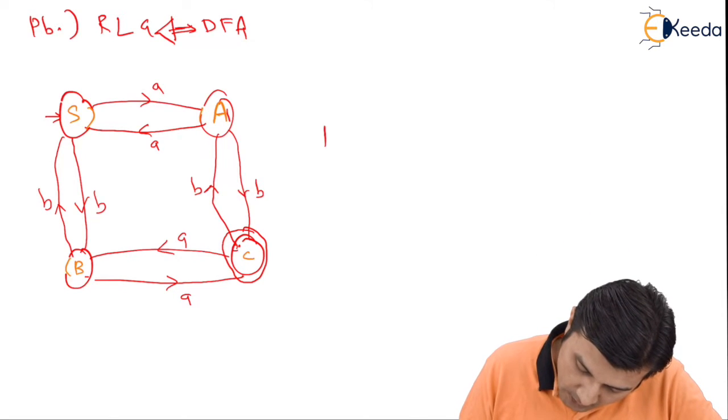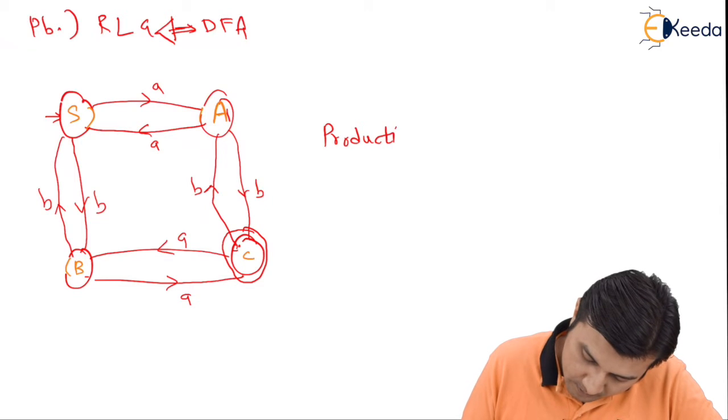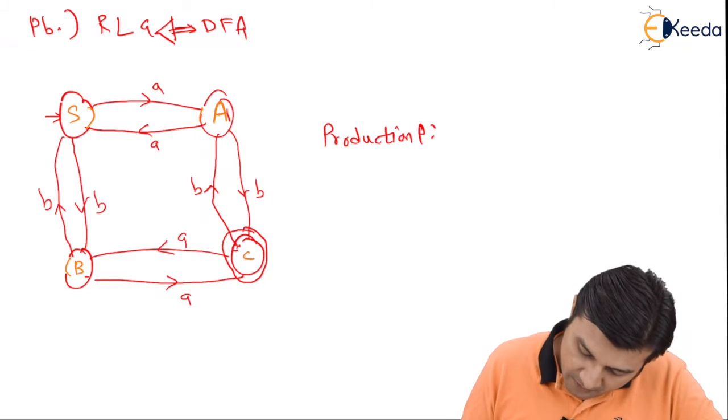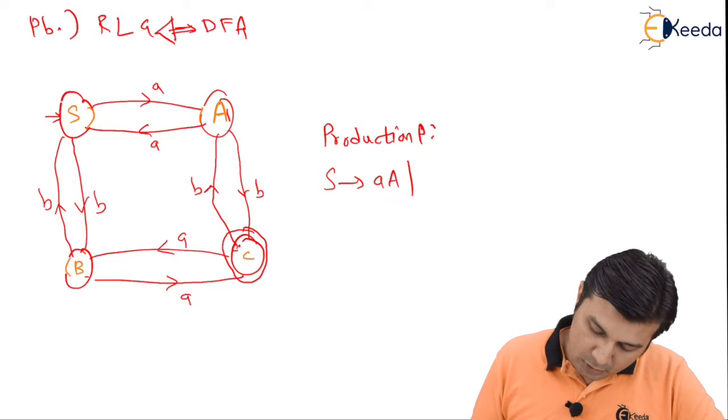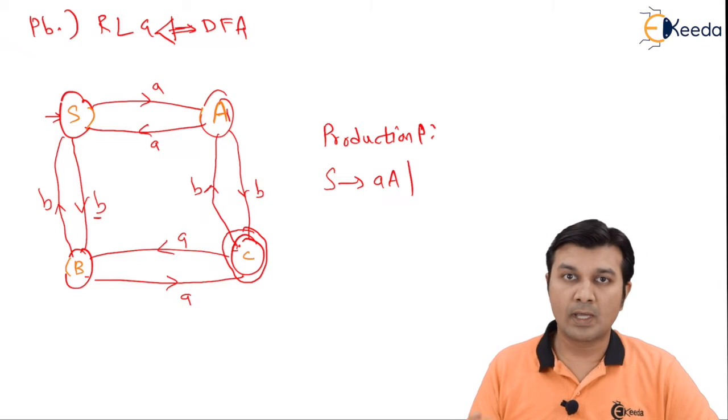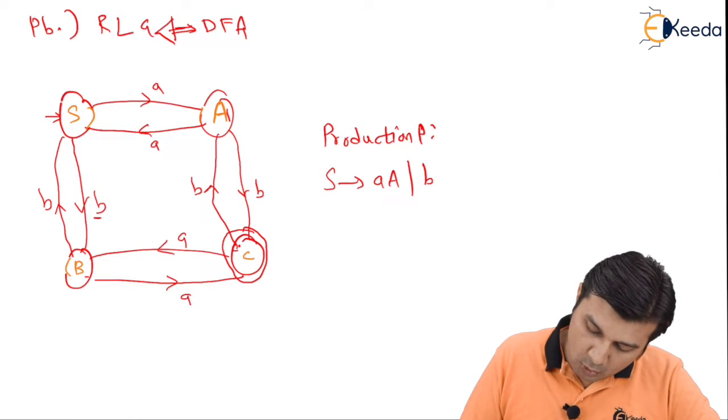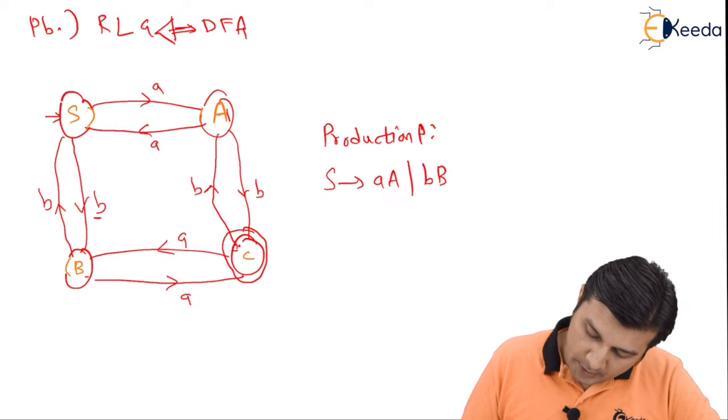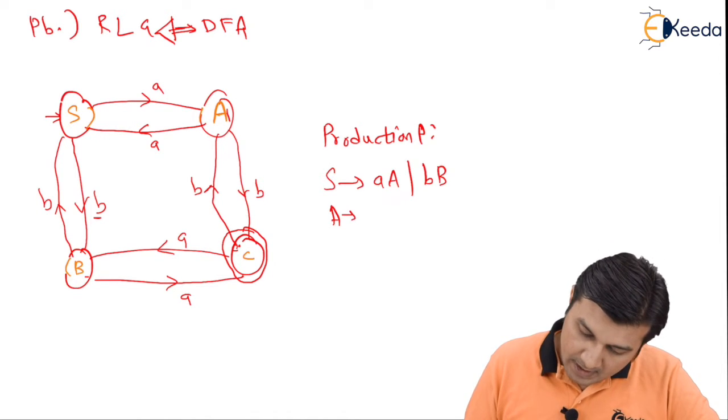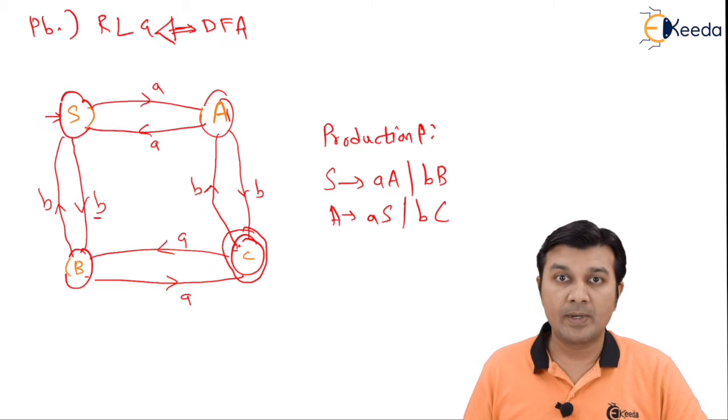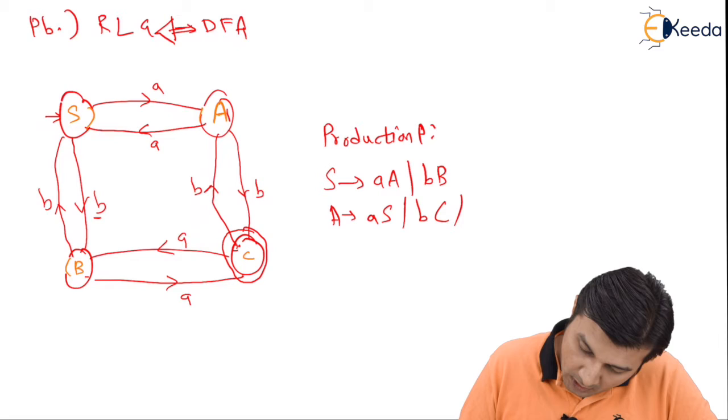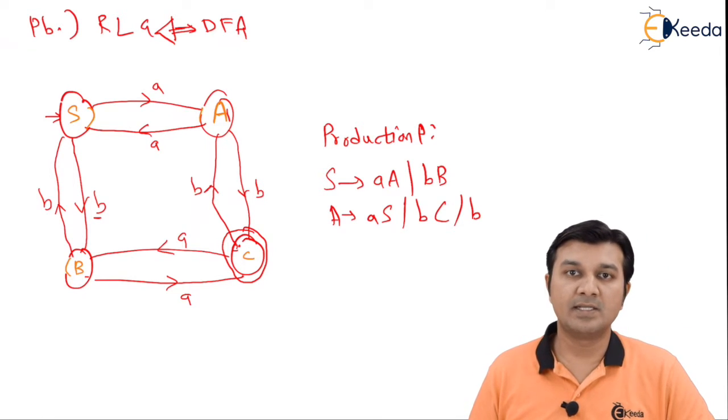This is my S, that is my A, this is my C and this is my B, where we are deciding that C is going to be the final state. To write the production rule, the first one I see is S on receiving a goes to A, so I write S gives aA. Similarly, S on receiving a b goes to capital B. Moving to the next variable, A on small a goes to capital S, A on small b goes to capital C, but capital C is the final state, therefore write a small b as an additional alphabet.